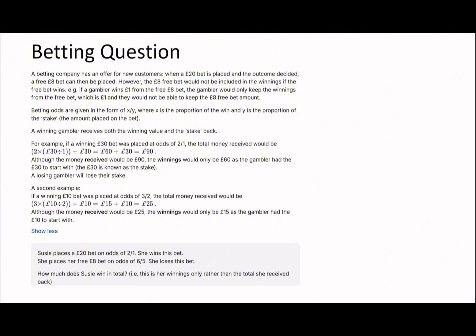Let's read this question. A betting company has an offer for new customers where a £20 bet is placed and the outcome decided, a free £8 bet can then be placed. However, the £8 free bet would not be included in the winnings. If the free bet wins, if a gambler wins £1 from the free £8 bet, they would only keep the winnings from the free bet, which is £1. They would not be able to keep the £8 free bet amount, which makes sense because they never put in that original £8.